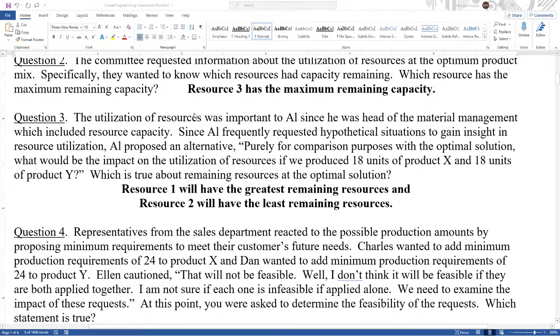Question three. The utilization of resources was important to Al since he was head of the material management, which included resource capacity. Since Al frequently requested hypothetical situations to gain insight in resource utilization, Al proposed an alternative. Purely for comparison purposes with the optimal solution, what would be the impact on the utilization of resources if we produce 18 units of x and 18 units of y? Which is true about the remaining resources at the optimal solution compared to the optimal solution? So let's bring this back. Here it is.